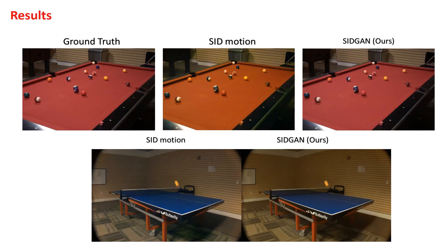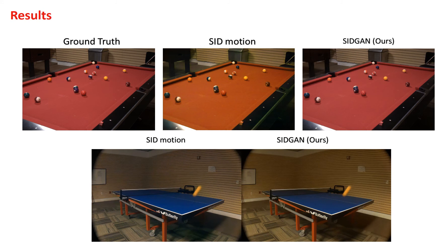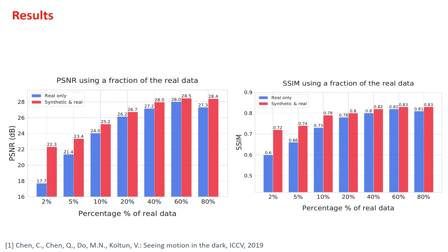Training using both synthetic and real data produces competitive results when evaluating performance under image quality and temporal stability metrics. We enable a state-of-the-art low-light motion model to better reproduce colors and reduce temporal flickering. Our experimental results on the SID Motion dataset show that combining dynamic synthetic data with real static data improves performance compared to training only on real static videos. We find that adding a small portion of real data is critical, helping to close the synthetic data domain gap.